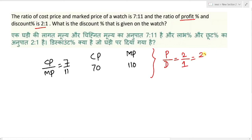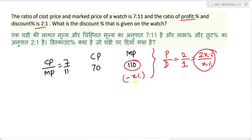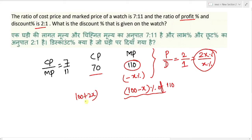Ratio terms में profit 2x percent है और discount x percent है। Mark price पे x% का discount दिया है तो वह value रह जाएगी (100 - x)% of 110। और यह value cost price से 2x percent ज्यादा होगी, तभी profit होगा — तो (100 + 2x)% of 70।